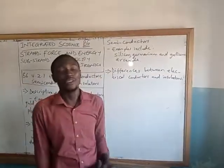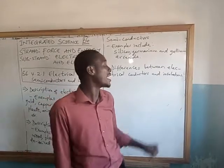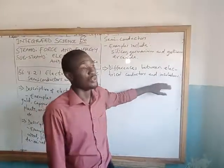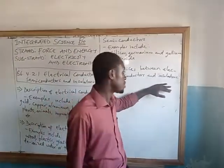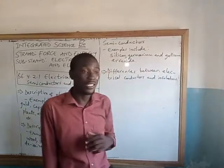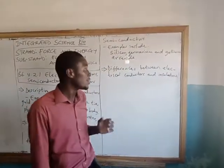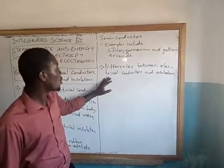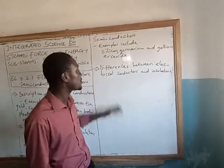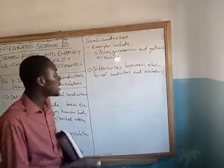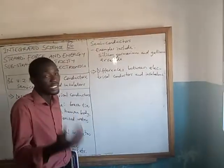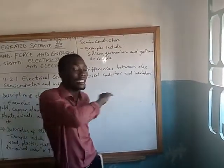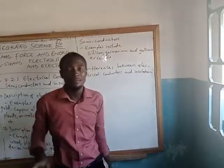For insulators, they do not have free electrons, so they are unable to conduct electricity like conductors. They also have great or extremely high electrical resistance, which prevents the charges from flowing. Also, electrical conductors are mostly metals, while insulators are non-metals.